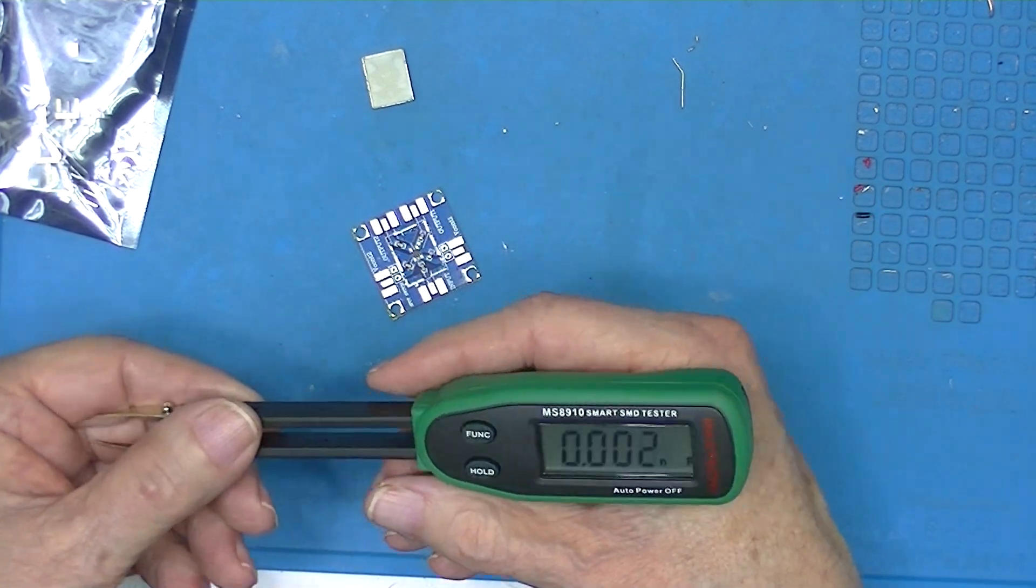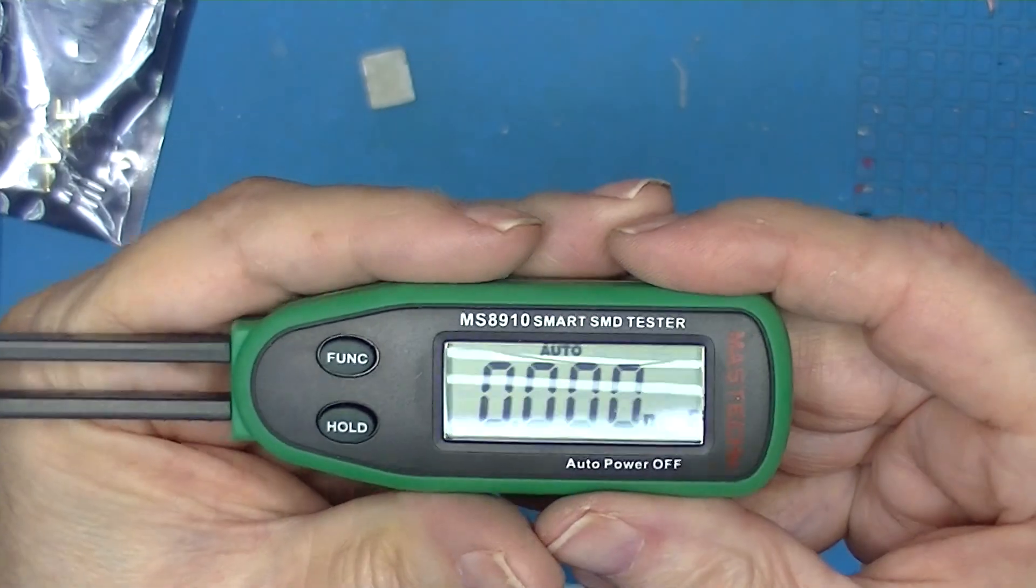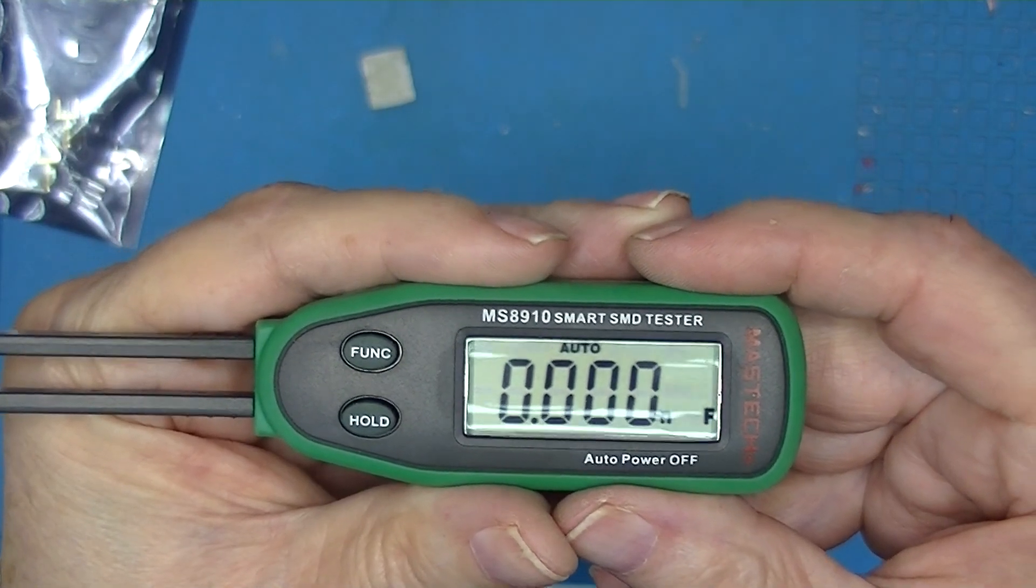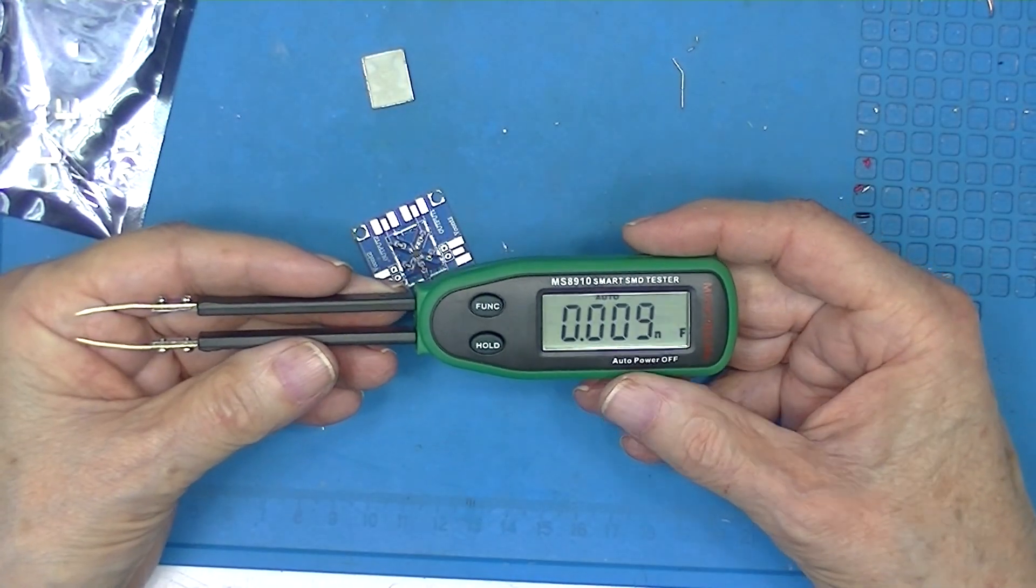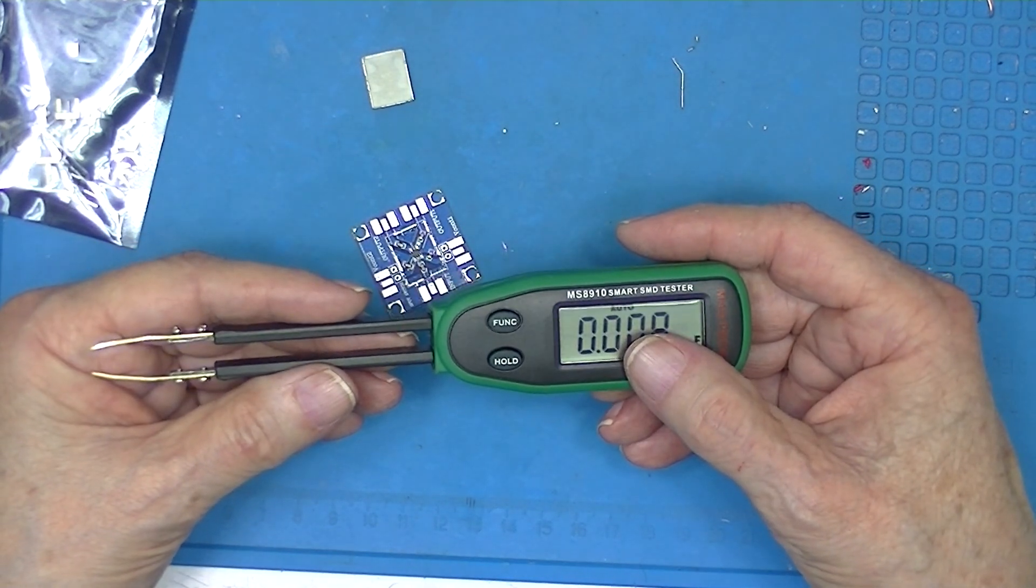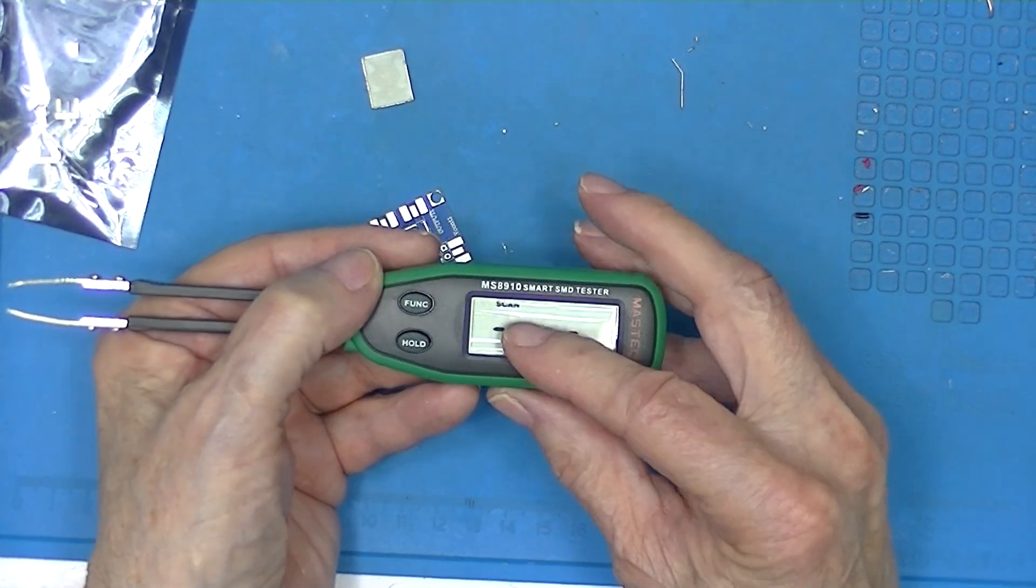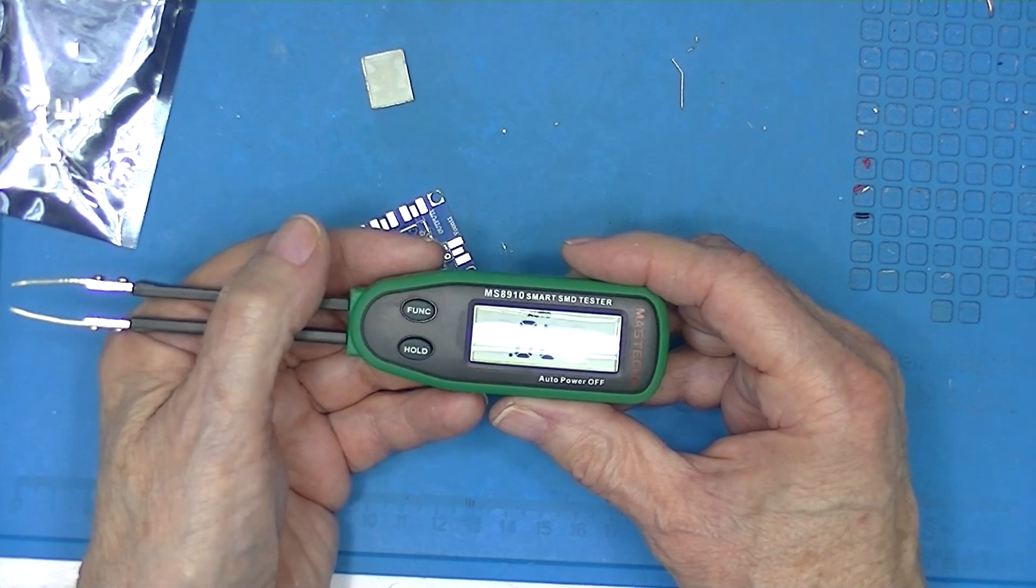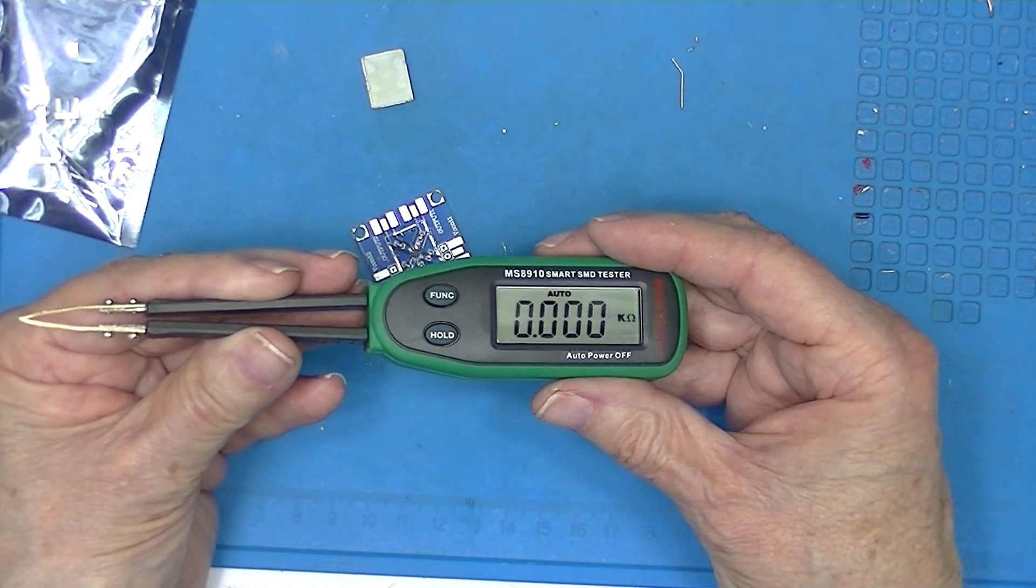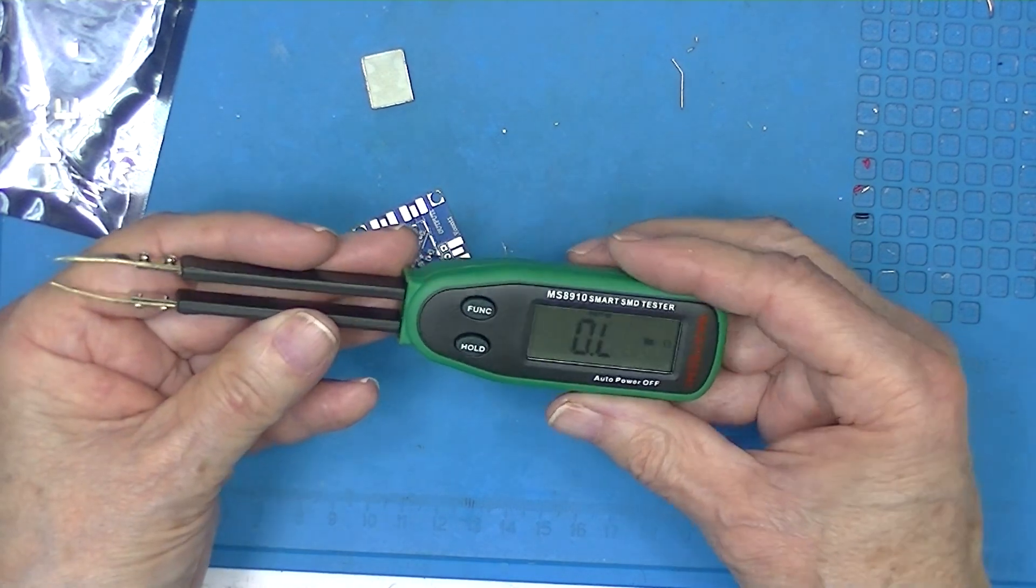By the way, this little tool - you can see it's a MASTEC, their model 8910. This will do resistance, capacitance, and diodes. It will auto-range as well as auto-scan. It will not do inductors.